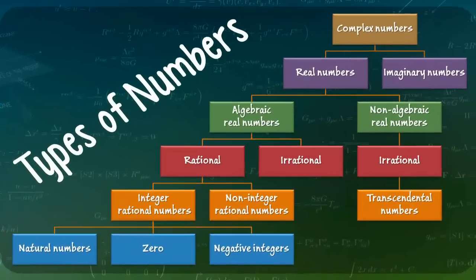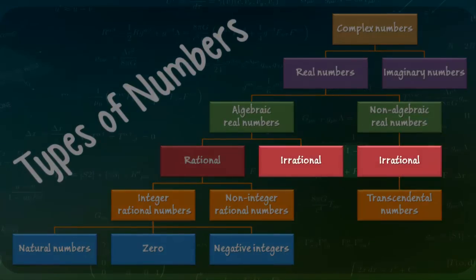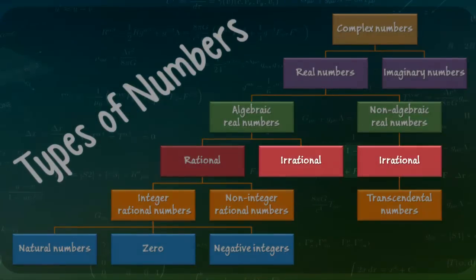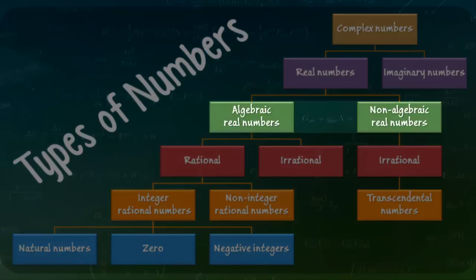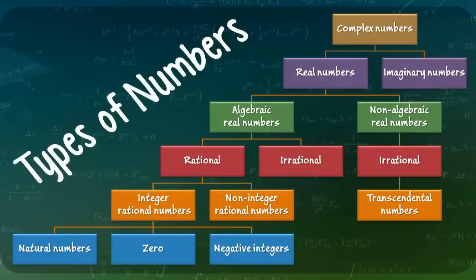Aside from rational numbers, there is also a type of number that is known as an irrational number. Note that irrational numbers can be either algebraic or non-algebraic, the difference between which we will discuss shortly.